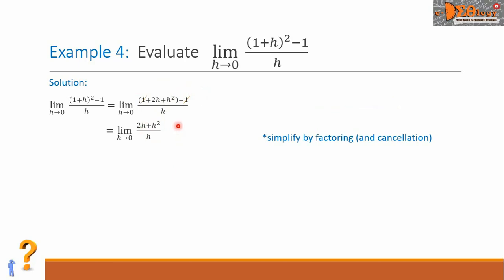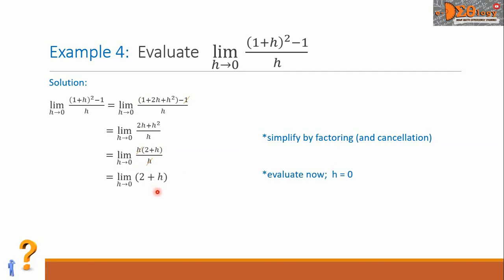In our numerator there is a common term, which is h, so we pull it out. The numerator becomes h times the quantity 2 plus h, all over the denominator h. We can see that h is common to both the numerator and denominator, so we cancel those. Our function is now simplified into 2 plus h. We are ready to evaluate the limit by substituting 0 for h, giving us 2 plus 0, and the final answer is simply 2.